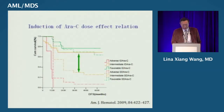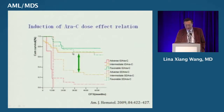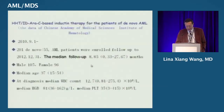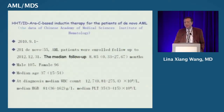From the survival data, for intermediate cytogenetic risk patients, those treated with intermediate-dose cytarabine did much better than those treated with standard-dose cytarabine. However, this data is not from a randomized trial — it was compared against historical controls — and is therefore not very convincing.